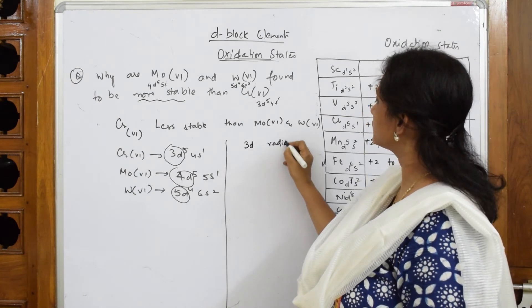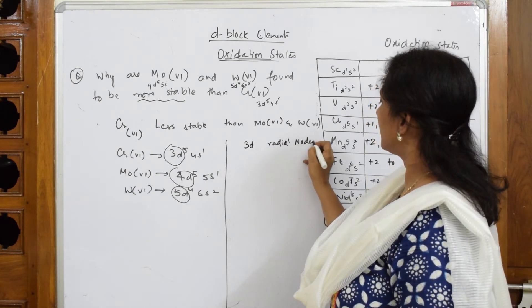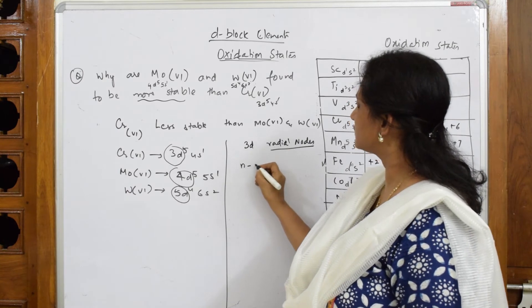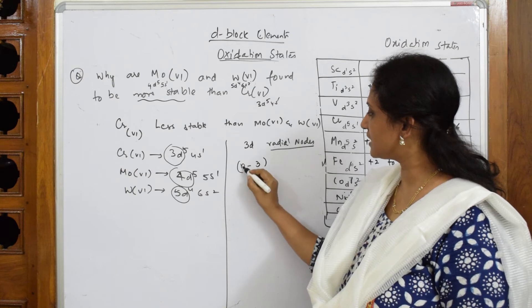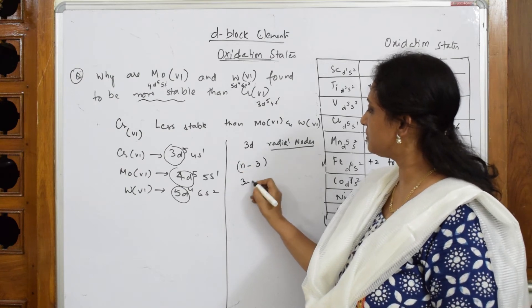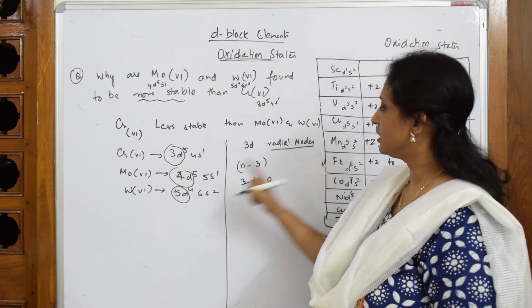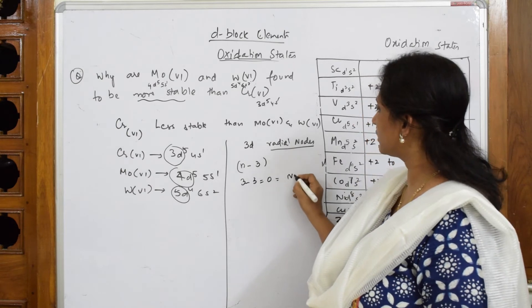is the formula. So now substitute, this n is equal to 3, this becomes 3 minus 3 equals 0. So 3d has no radial nodes.